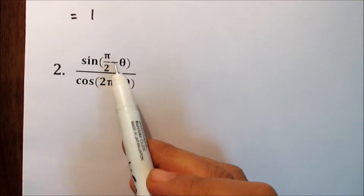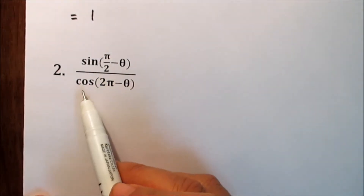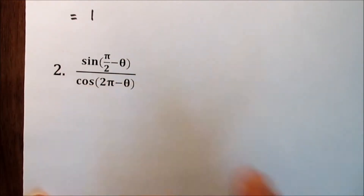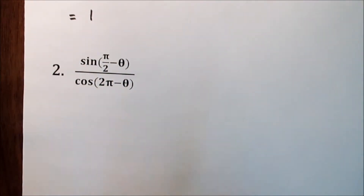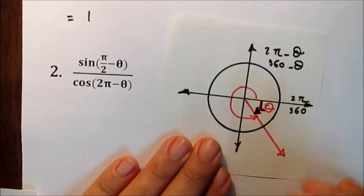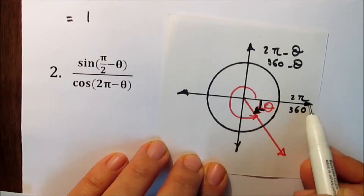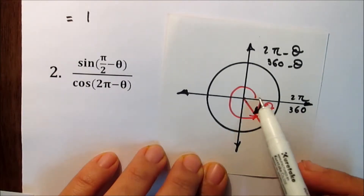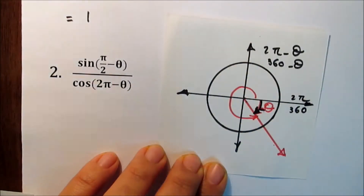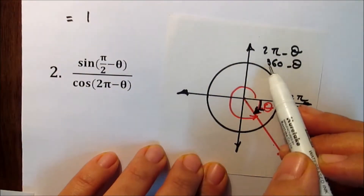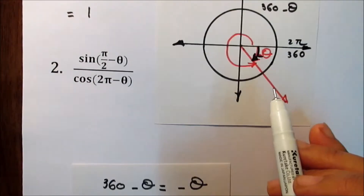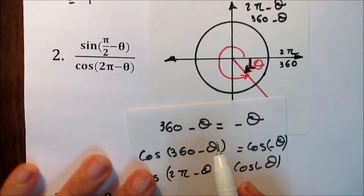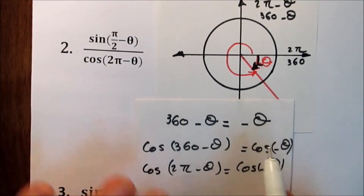Number 2: sine of pi over 2 minus theta, over cosine of 2 pi minus theta. Let's start with 2 pi minus theta. To understand this, recall the unit circle. This is 2 pi or 360 degrees. 2 pi minus theta means 360 minus theta, and the angle is in the fourth quadrant.